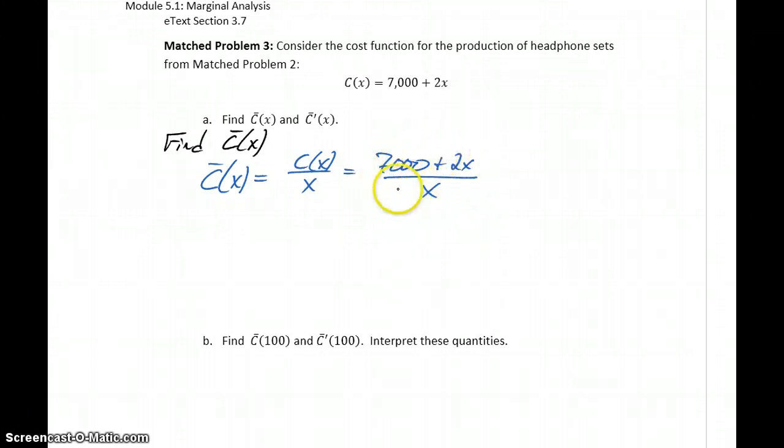However, this expression is a little too complicated for us right now to take the derivative of. So what we're going to do is break it down a little bit more and split this into the sum of two different fractions. So we'll rewrite this as 7,000 over x plus 2x over x.